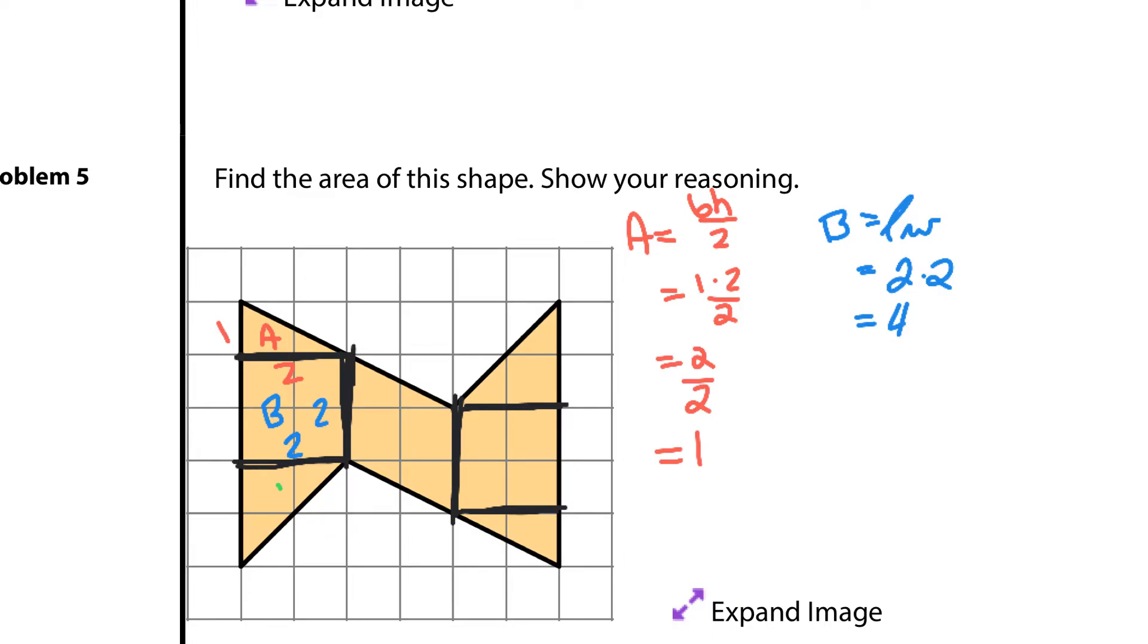All right. C. As you can see here, I have a base of two, and a height of two. And so for C, we're going to do base times height, divided by two, again, with the triangle.